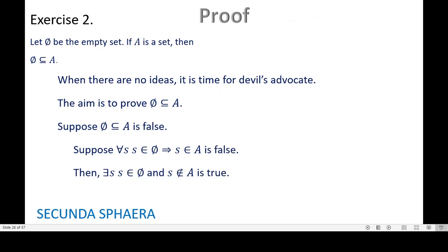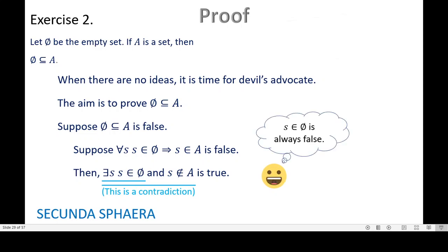Now we can work with this. For the last statement that we have, we have 'exists S in the empty set'. This is important to pick up, because this is impossible. By the definition of the empty set, this cannot happen — this is a contradiction. So if we have an S in the empty set, this is always false.